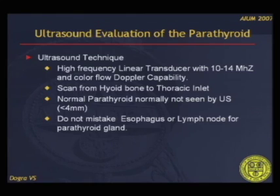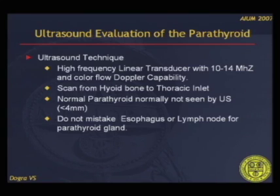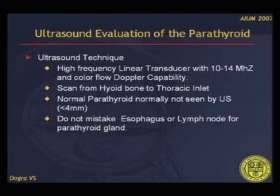The normal parathyroid cannot be seen by ultrasound as they are less than 4 mm in size. There are many entities in that location which could be mistaken for the parathyroid gland, such as the esophagus or lymph nodes — we will go over these false positives in the coming slides.